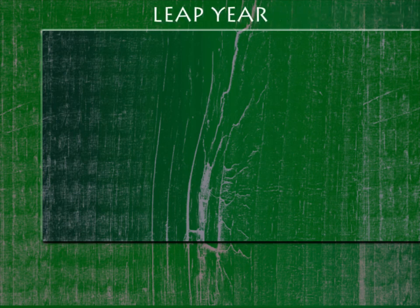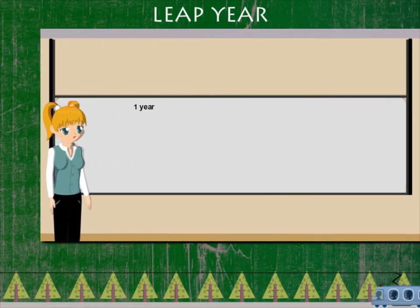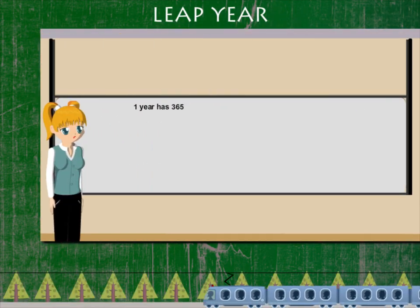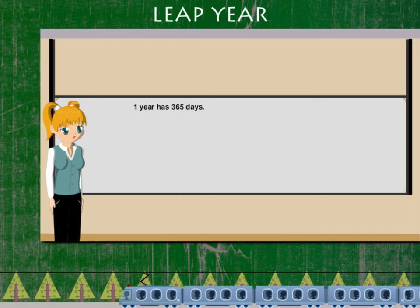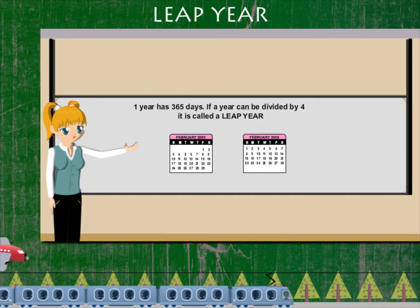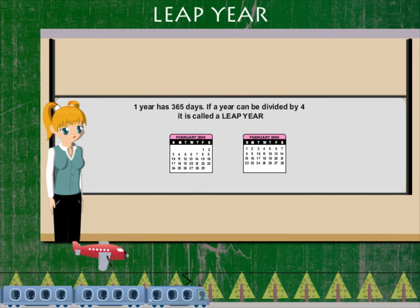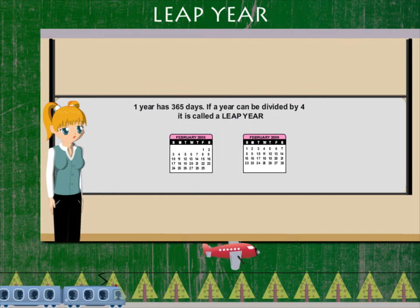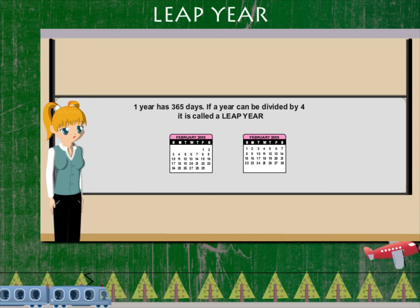One year has 365 days. If a year can be divided by four, it is called a leap year.